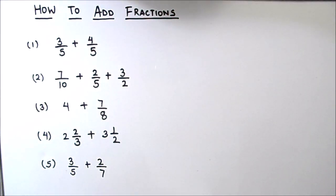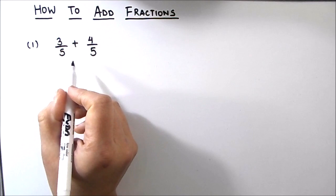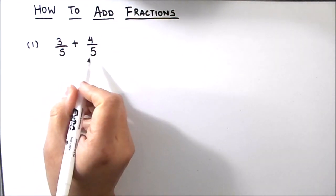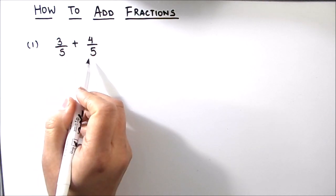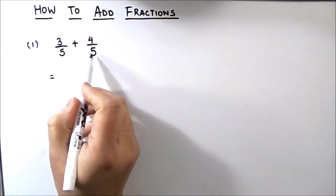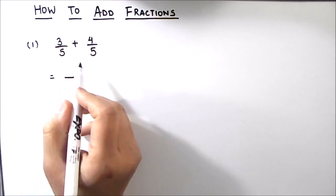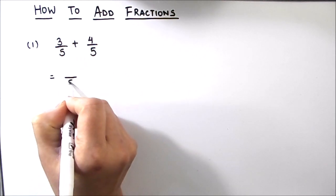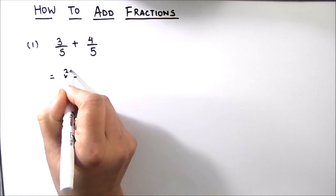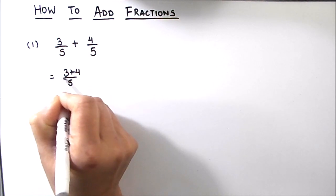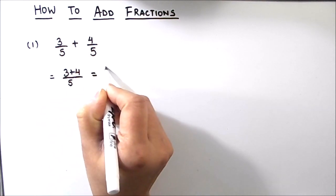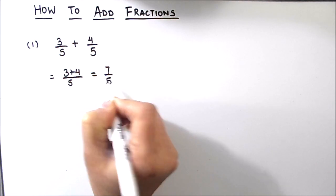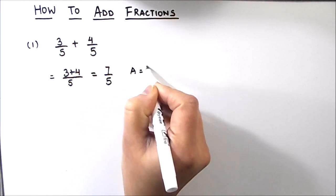So let's start with our first example, which is very easy — the addition of two like fractions. Like fractions are fractions having the same denominator. Since the denominators are the same, we can write the two fractions as a single denominator with the addition of the numerators. So this will be 3 plus 4 divided by 5, which is equal to 7 by 5. The final answer is 7 by 5.